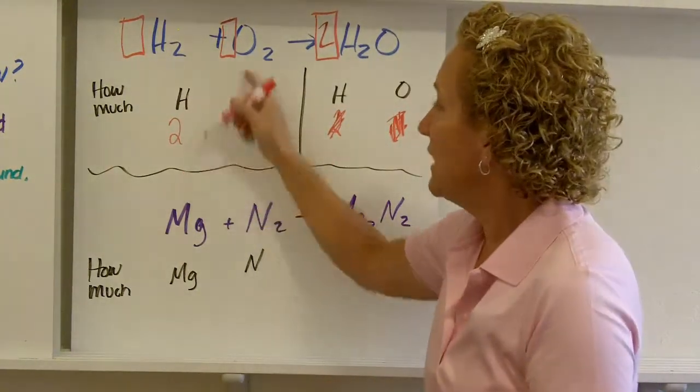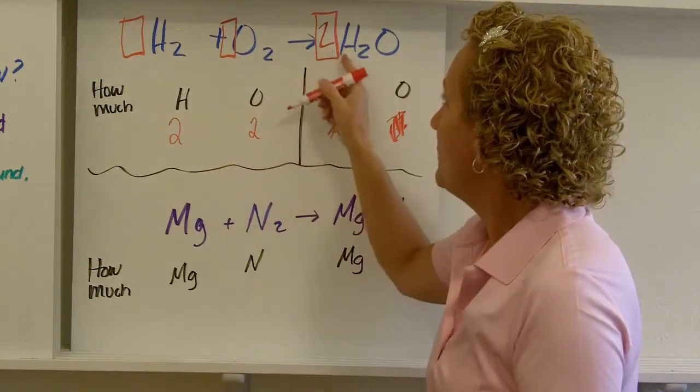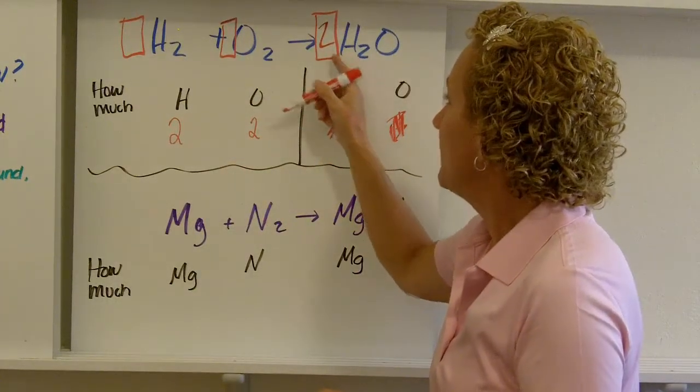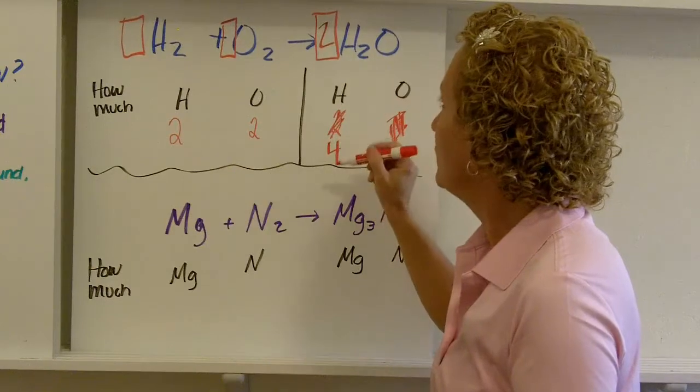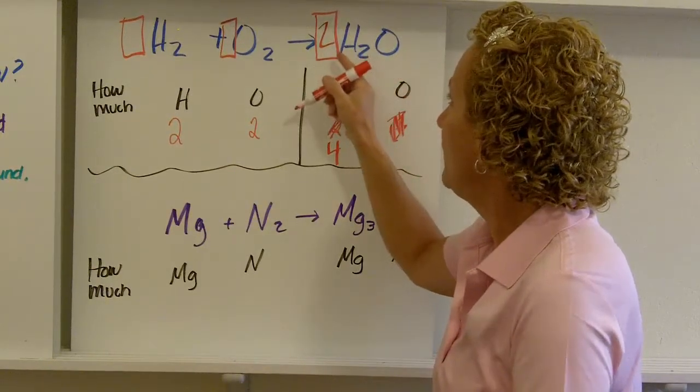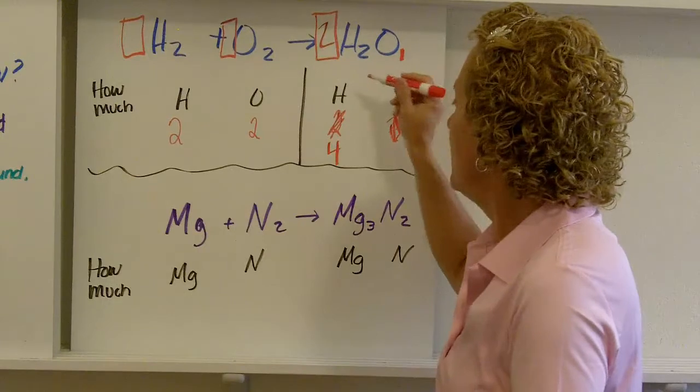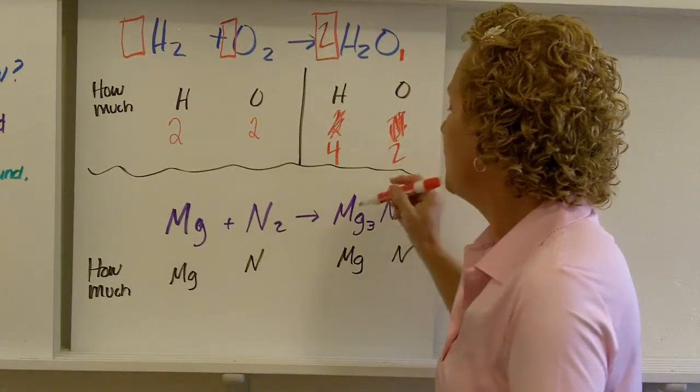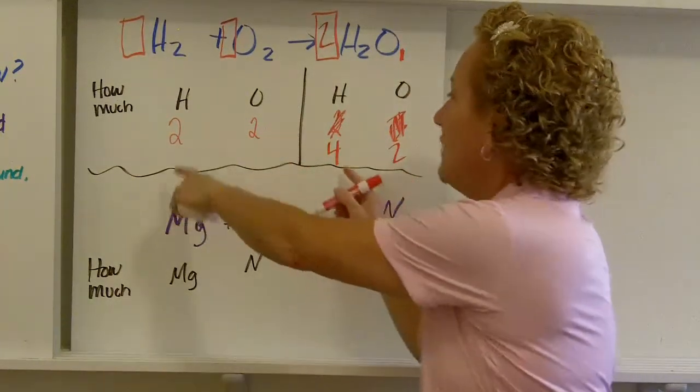I still have two hydrogens and two oxygens. Now how much hydrogen do I have? Two times two. I have four hydrogens. How much oxygen do I have? Two times one. I have two. Remember we have that invisible one there? Two times one. I have two. So now my oxygens are balanced, but now my hydrogen's not balanced.